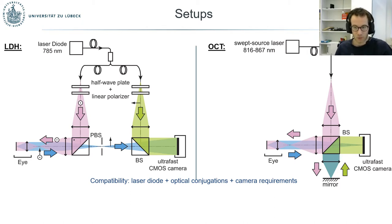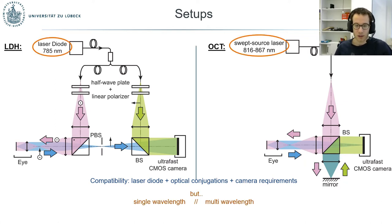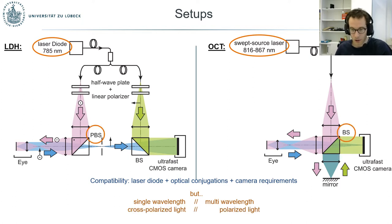For LDH, the 60 kHz frame rate is about sampling Doppler frequency shifts up to a few tens of kHz. With OCT, it's about freezing the motion of the eye during the measurement of a volume, also requiring about 60 kHz. The key difference is that LDH uses a single wavelength to detect Doppler fluctuations, whereas OCT requires multiple wavelengths.